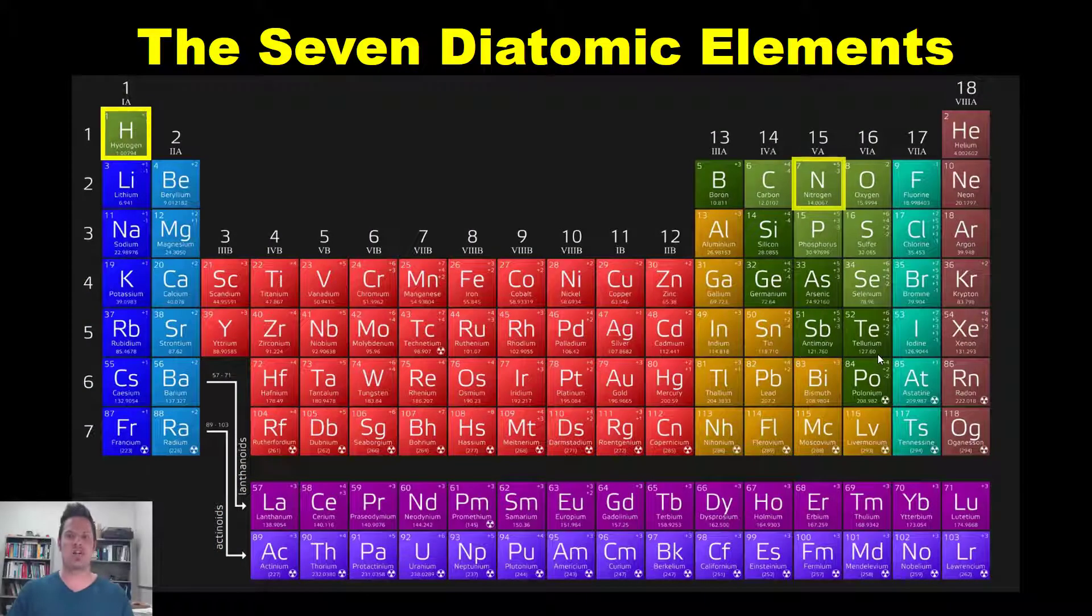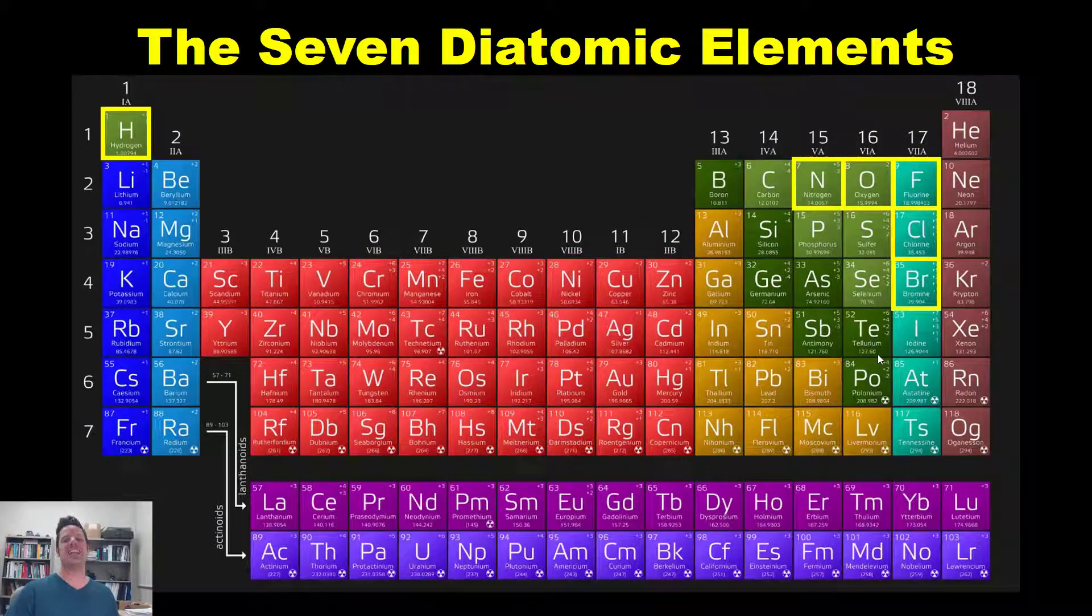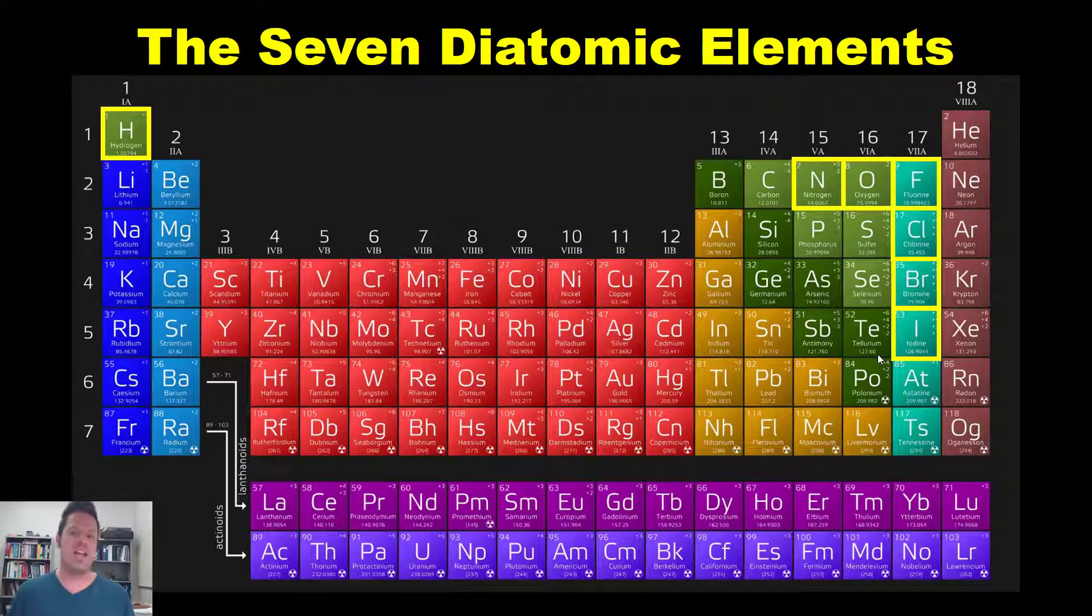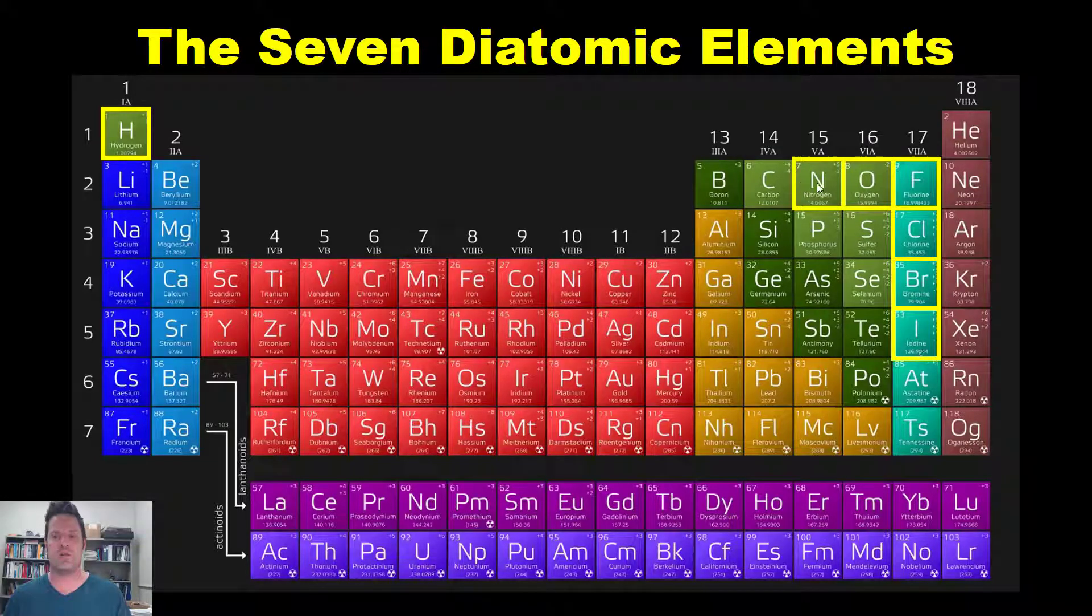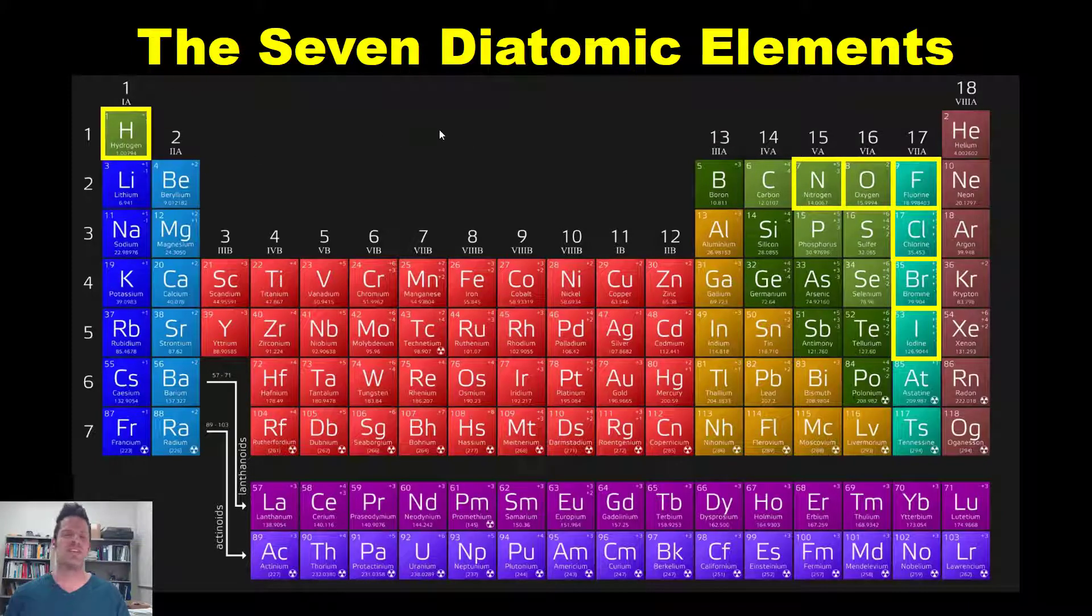Hydrogen, nitrogen, oxygen, fluorine, chlorine, bromine, and iodine. These seven elements. And in fact, if you look at the periodic table and box all of them in, they look like the number seven over here to the right, as well as this floater, hydrogen, over here to the left. So those are the seven diatomic elements.